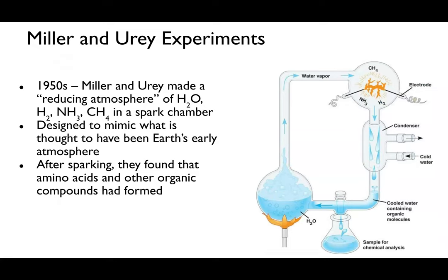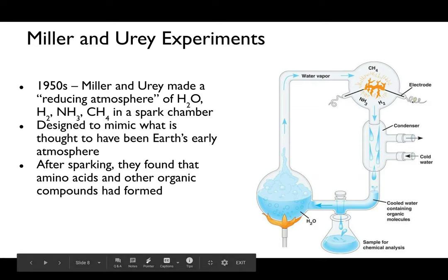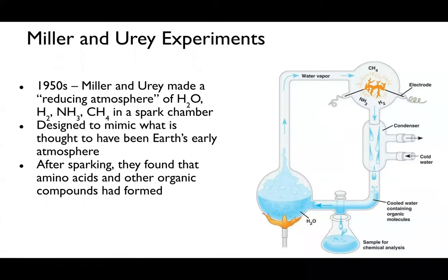This idea started in the 1950s. Two scientists, Miller and Urey, created a reducing atmosphere by taking nitrogen in the form of ammonia, methane, hydrogen gas, and water, and sparked them in a chamber. The spark mimicked lightning, which was abundant on early Earth. They analyzed the chemicals that resulted and found that by spontaneously sparking these chemicals, they produced some of the building blocks of life—organic or carbon-based compounds.